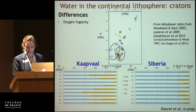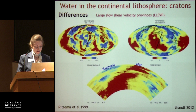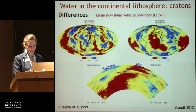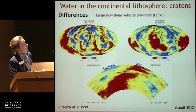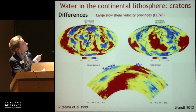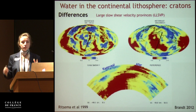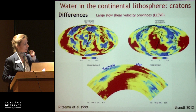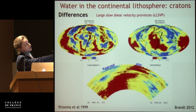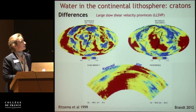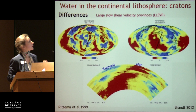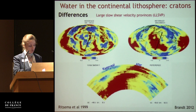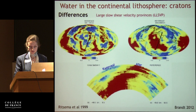Another big difference is this: seismic velocity maps show that beneath Africa there is a giant upwelling plume of hot material rising from the lower mantle directly beneath the Kaapvaal region, whereas nothing like this exists beneath Siberia. I don't know if this is related to the water differences, but it is definitely different between the two cratons. To resolve this we would need to analyze all cratons worldwide and see if a trend emerges.